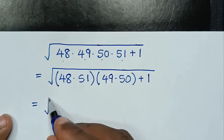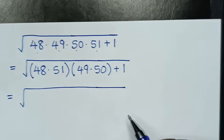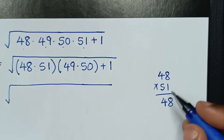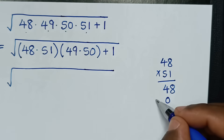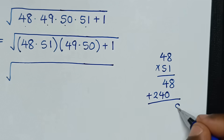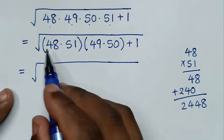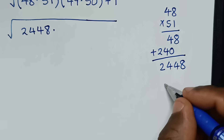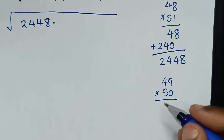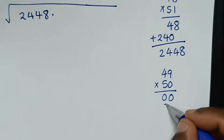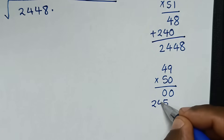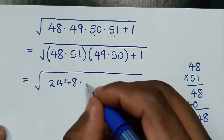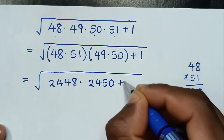Let's multiply. 48 times 51 equals 2448, and 49 times 50 equals 2450. So it will be square root of 2448 times 2450 plus 1. The difference between 2448 and 2450 is 2, so 2448 is the same as 2449 minus 1, and 2450 is the same as 2449 plus 1, giving square root of (2449-1)(2449+1) plus 1.